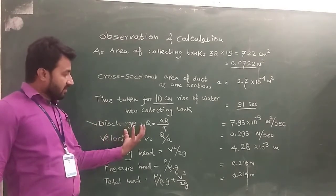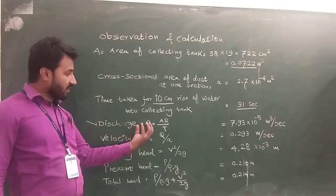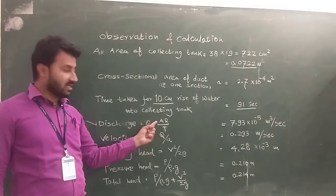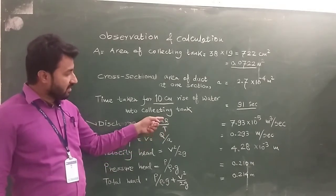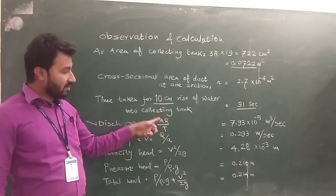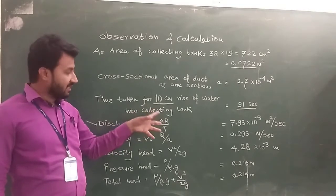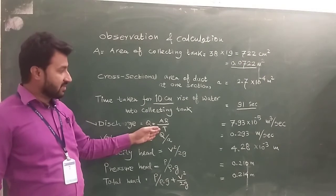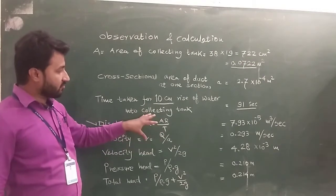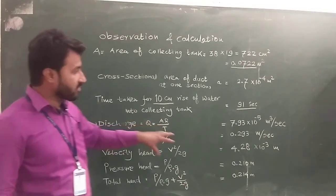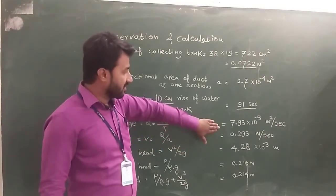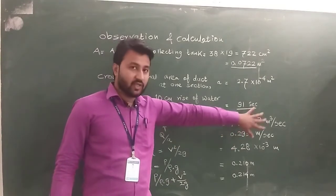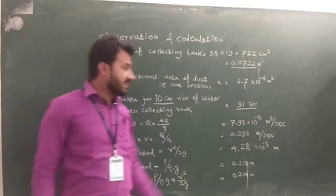The value of actual discharge is calculated from the equation Q equals area of the collecting tank multiplied by the rise, divided by the time required for that rise. Putting in the values — area 0.0722 m², rise 10 cm, time 91 seconds — we found the discharge Q as 7.93 × 10⁻⁵ meter cube per second.